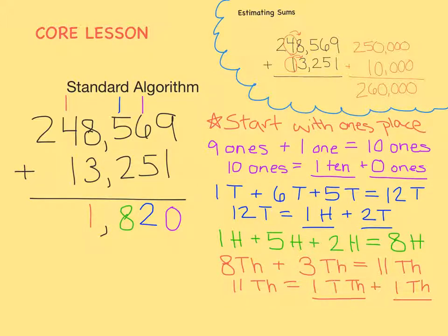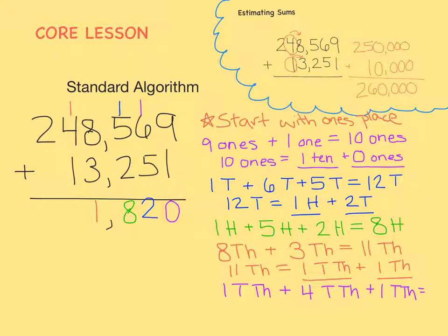Now, let's move on to our ten thousands. One ten thousand plus four ten thousands plus one ten thousand equals six ten thousand. So, the six ten thousands can go under the ten thousands column. And finally, all we're left with is the two in the hundred thousands place with nothing to add it to. So, that means two plus nothing equals two hundred thousand.